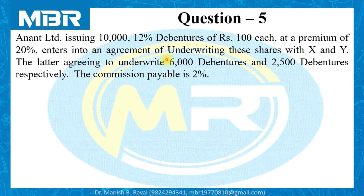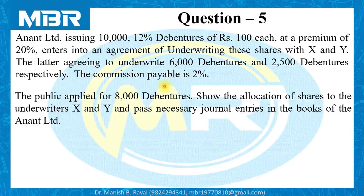The underwriting commission rate is 2%. The public applied for 8,000 debentures. We need to show the allocation of debentures to underwriters X and Y and pass the necessary journal entries in the books of Anant Limited.